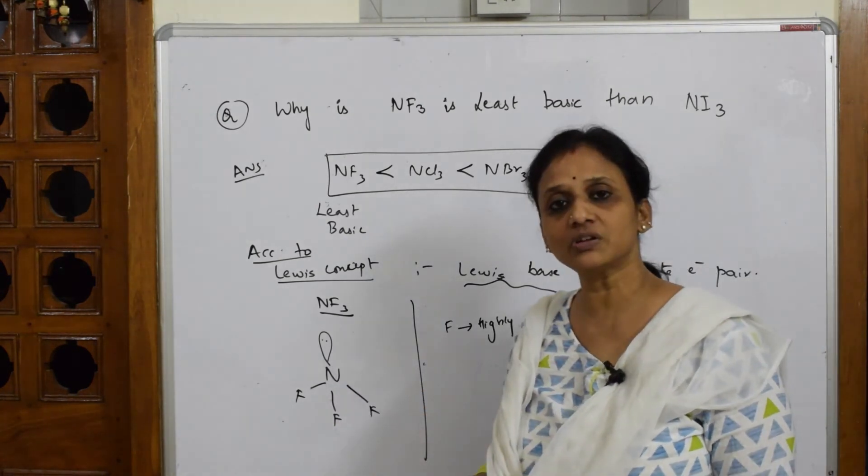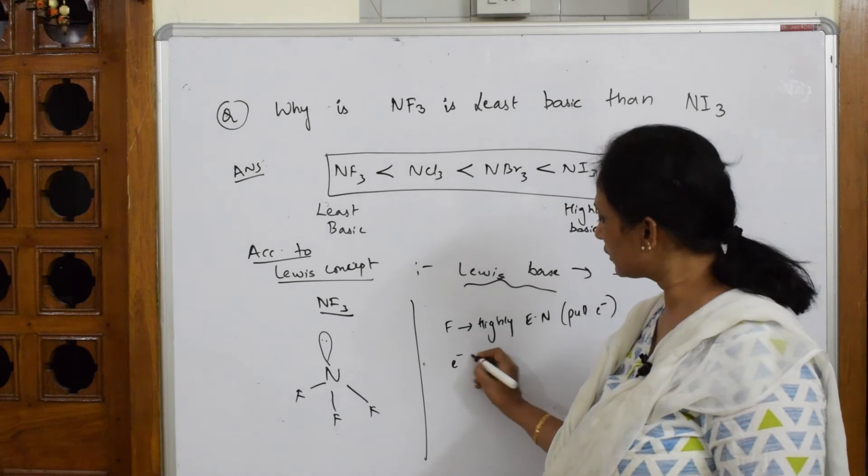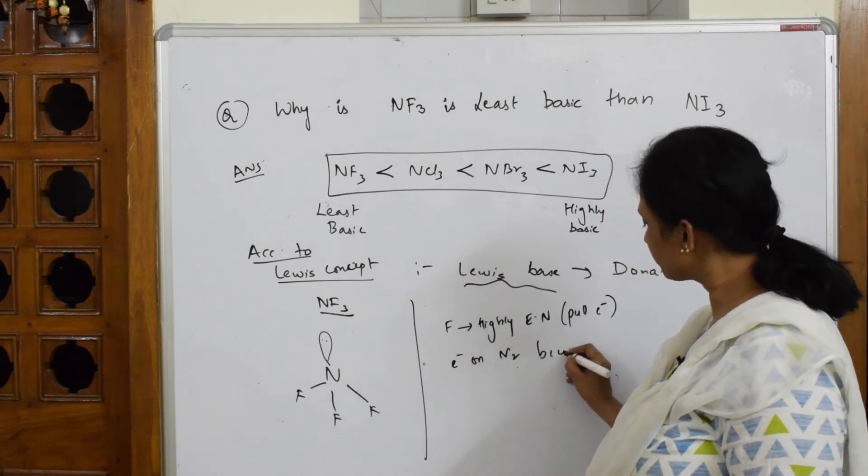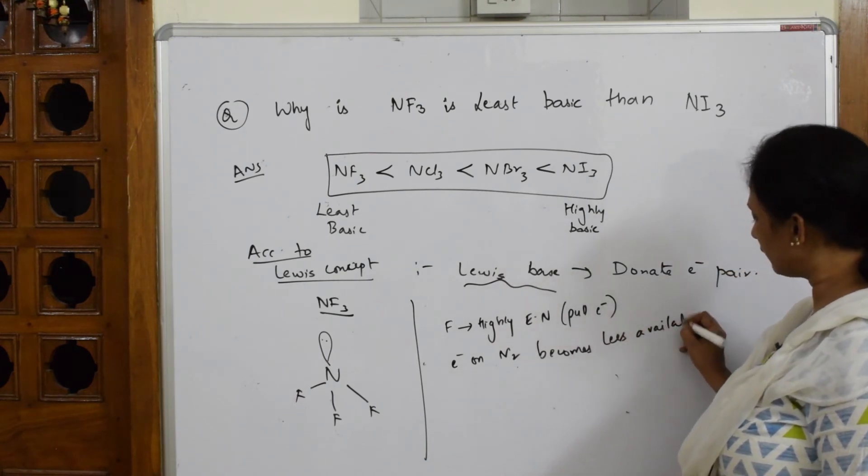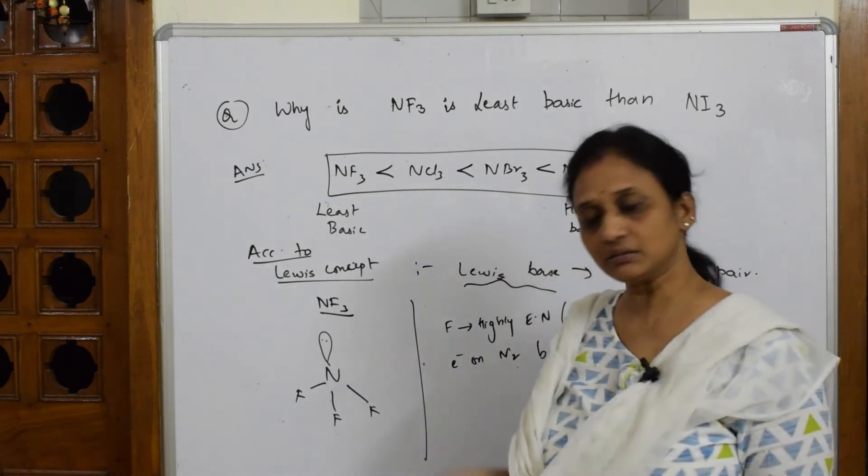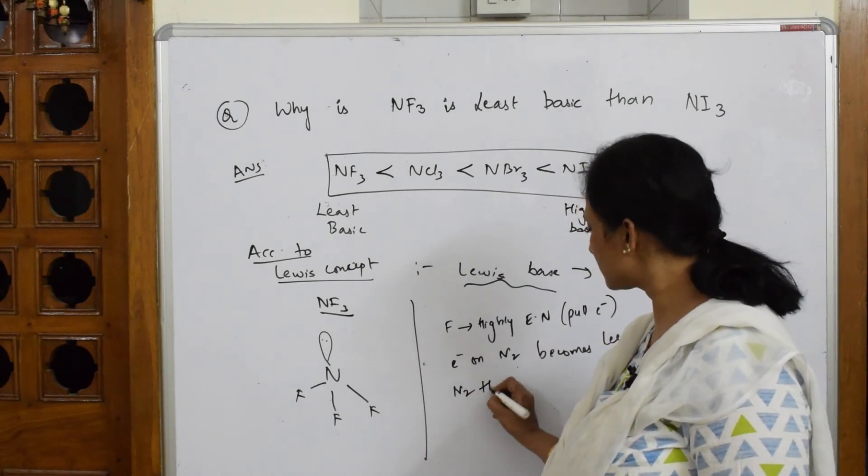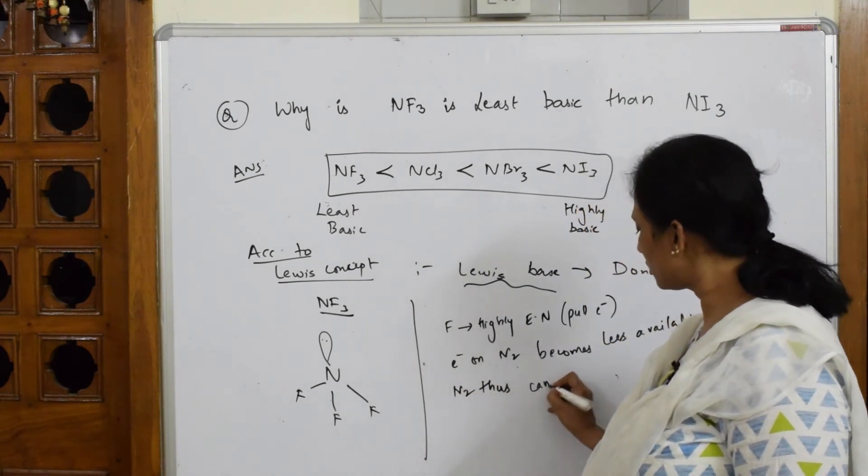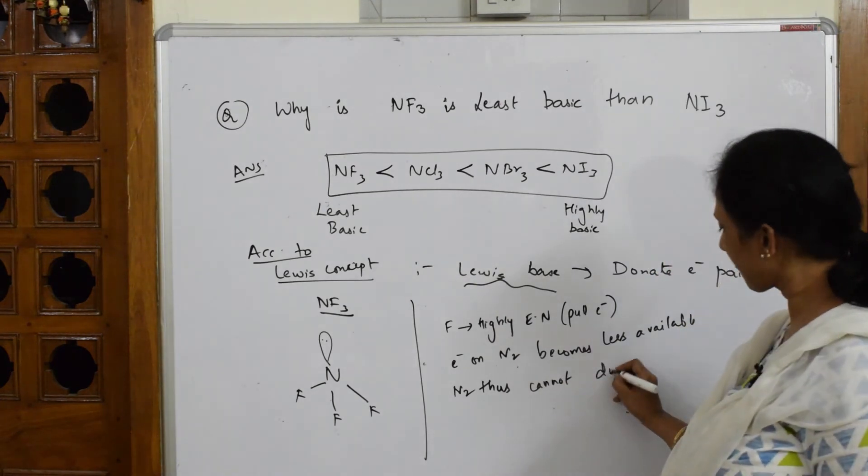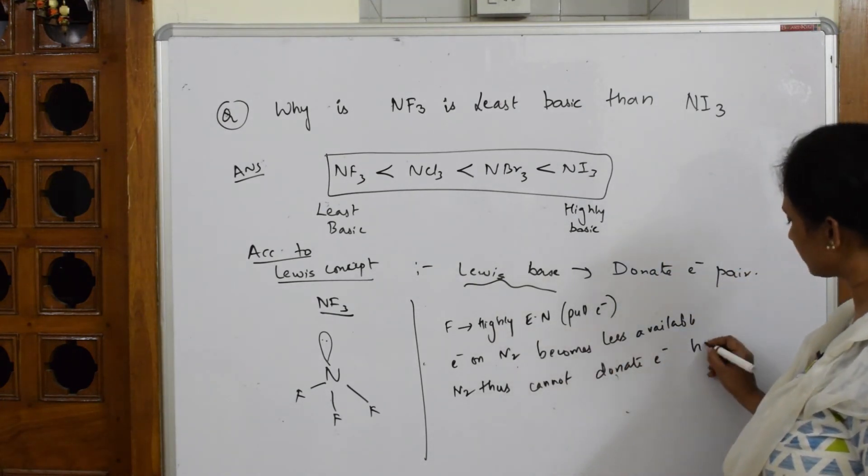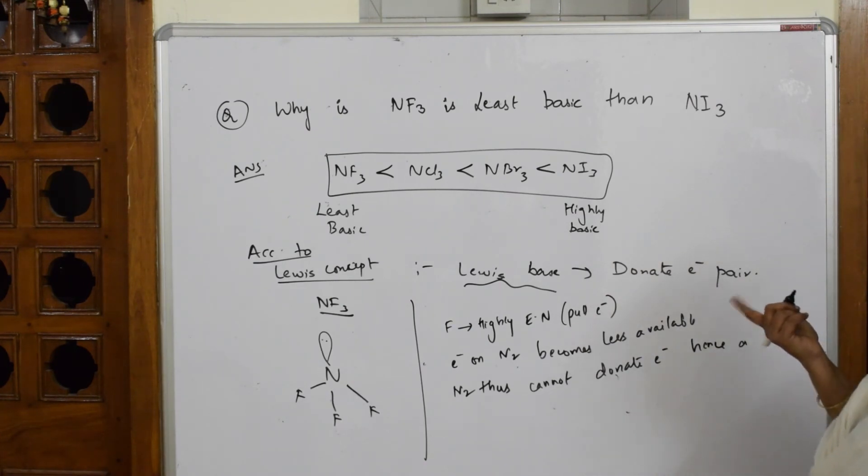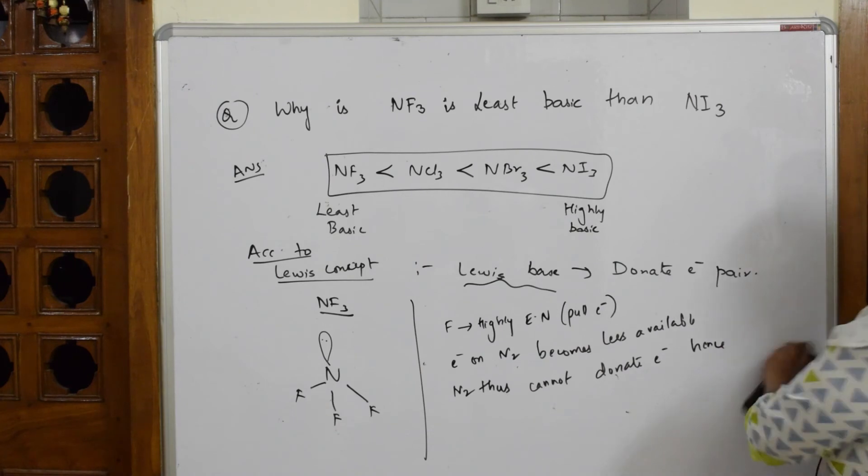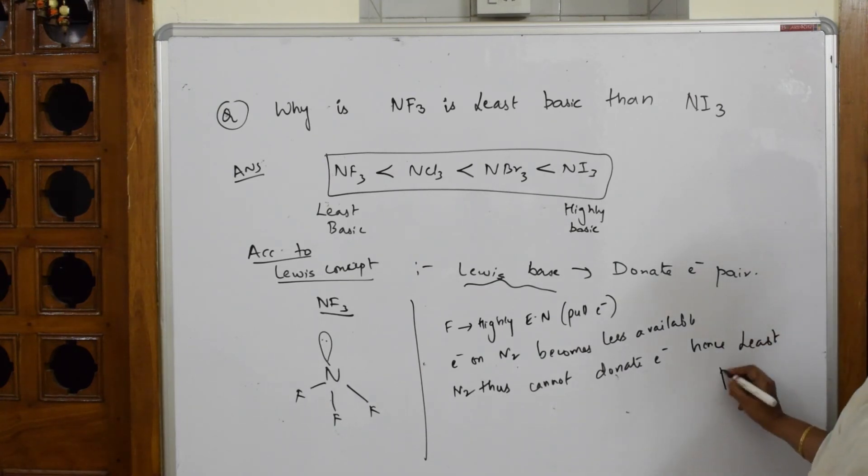When it is trying to pull the electrons, are electrons available? Nitrogen electrons on nitrogen becomes less available. When they are less available, will it donate? Nitrogen thus cannot donate electrons, hence a weak base, or hence it is least basic.